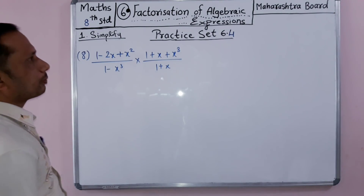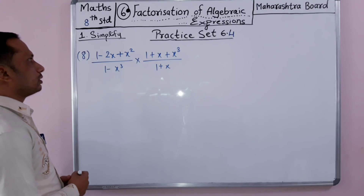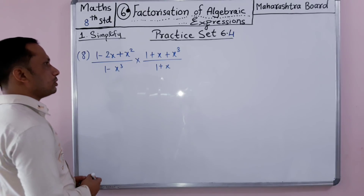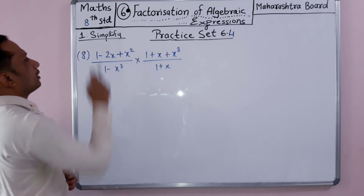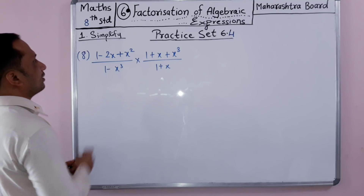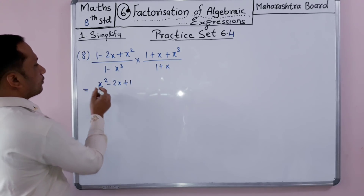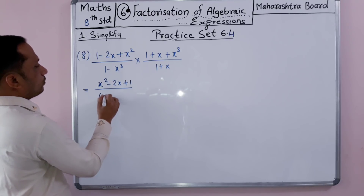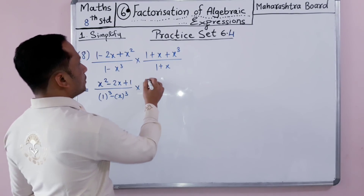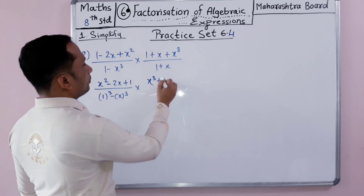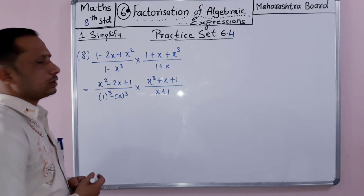This is the last problem of practice set 6.4. The problem is: 1 minus 3x plus x squared over 1 minus x cubed, times 1 plus x plus x cubed over 1 plus x. We rearrange the sequence to write the numerator as x squared minus 2x plus 1, and 1 minus x cubed is written as 1 cubed minus x cubed. The second part has x cubed plus x plus 1 and then x plus 1.